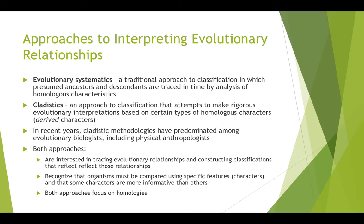There are two different approaches or schools of thought to interpreting evolutionary relationships. One is evolutionary systematics and the other is cladistics. Evolutionary systematics is a traditional approach to classification where presumed ancestors and descendants are traced in time by analysis of homologous characteristics. When generating a phylogenetic tree in evolutionary systematics, the length of the branches are indicative of the time span or time since divergence.